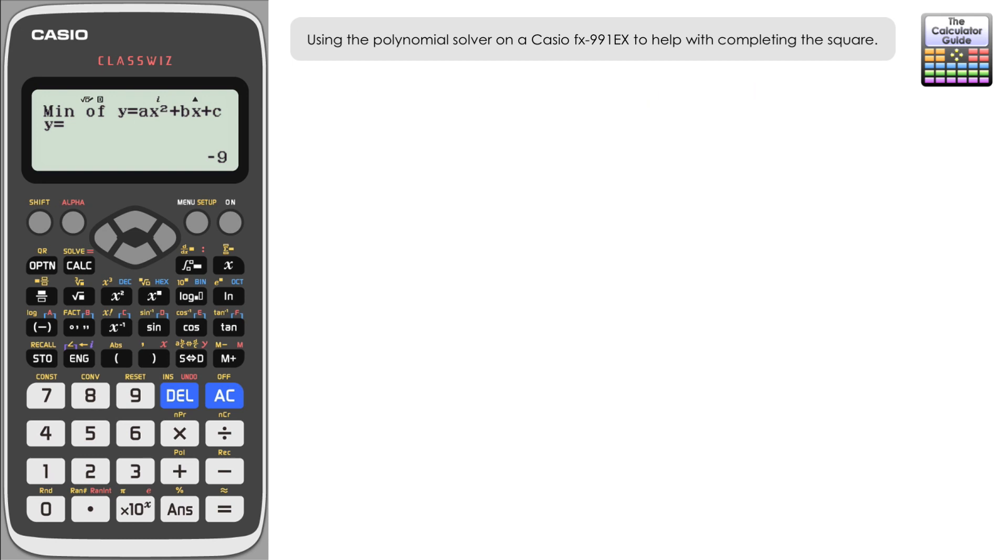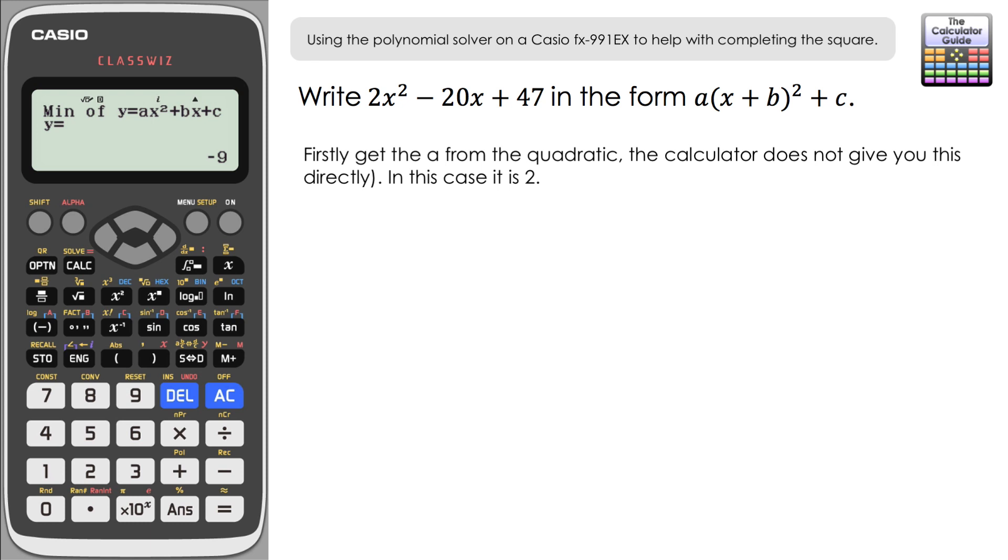Let's have a look at a second example. This time we have a coefficient in front of the x². We've got 2x² - 20x + 47. Again, we're just going to write in the form a(x + b)² + c. So we're okay to use the calculator to do this, and again let's just reference the a. Now the calculator doesn't tell us the a directly. This is where we've got to be careful, but the a is just the number that is in front of the x² on your original quadratic. So in this case our a is 2. So we're going to start off our completed square with 2. Let's put this into the calculator and find out our b and c.